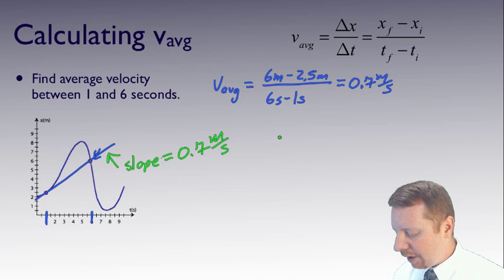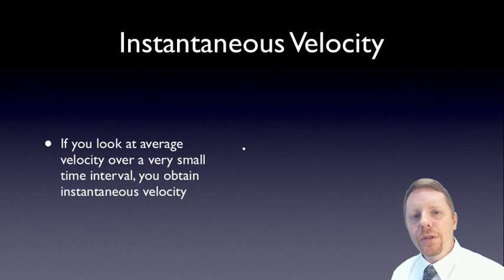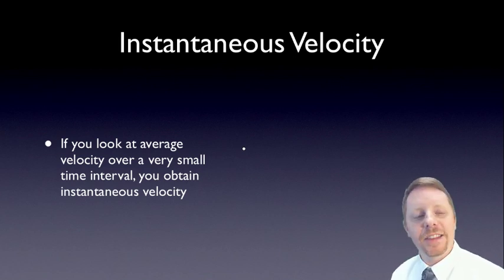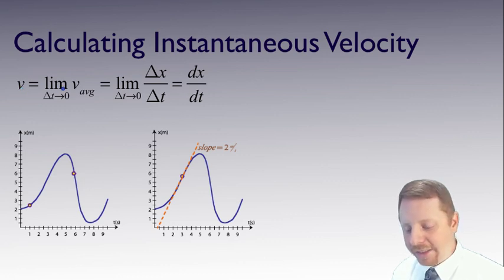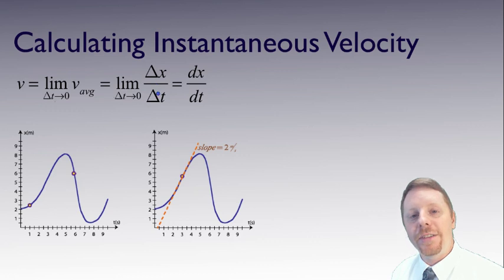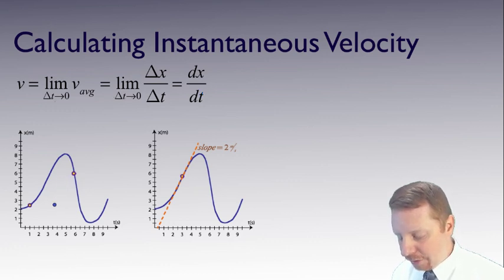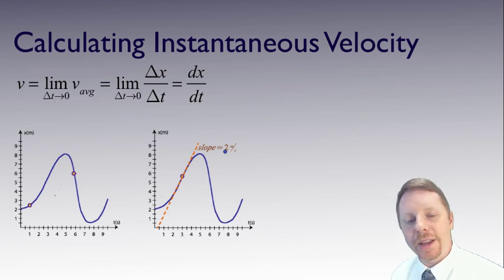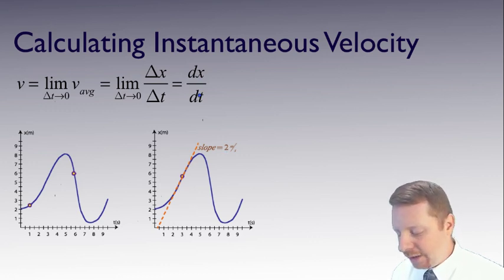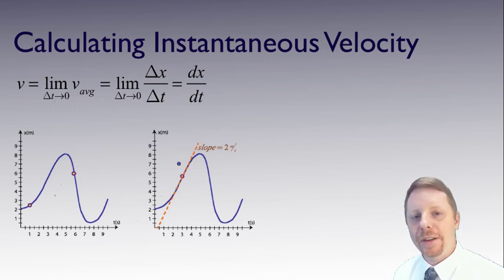But that doesn't tell you everything you might want to know. What about instantaneous velocity? If you look at average velocity over a very small time interval — making delta t smaller and smaller until it's infinitesimally small — you obtain instantaneous velocity. Instantaneous velocity v is the limit of the average velocity as delta t approaches 0, or the limit as delta t approaches 0 of delta x over delta t, which is the first derivative of x with respect to time. On the graph, what we're really doing is taking the slope of the line tangent to the curve at that point — which gives about 2 meters per second here.